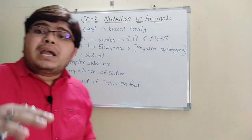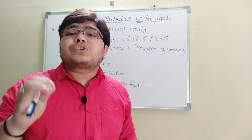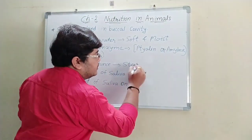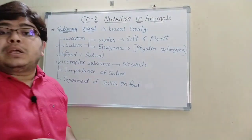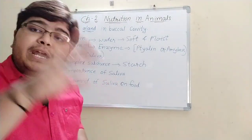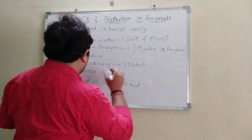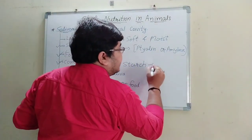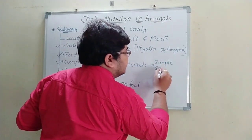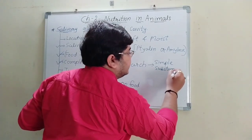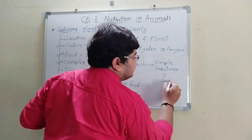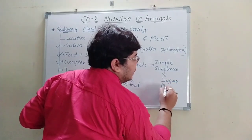The food, which is a complex substance known as starch, gets converted into a simple substance known as sugar or glucose.